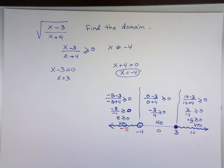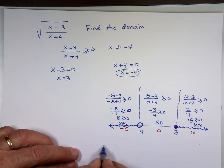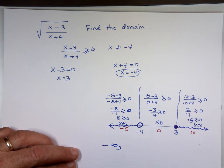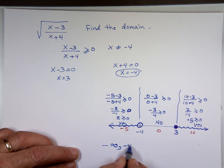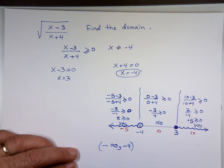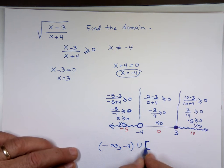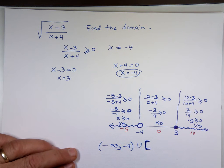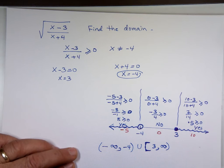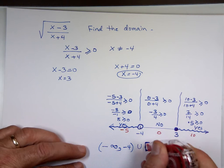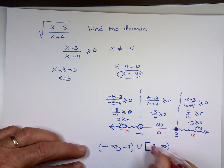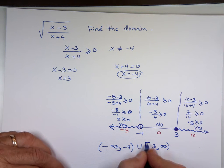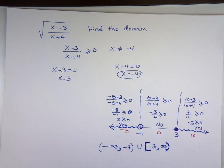So the domain is: from negative infinity to -4 (neither included) union from 3 to infinity (3 included). In interval notation: (-∞, -4) ∪ [3, ∞). That's a parenthesis, then a square bracket, then a parenthesis.